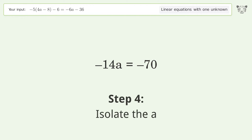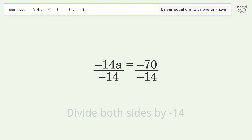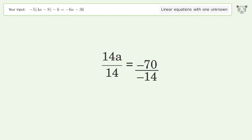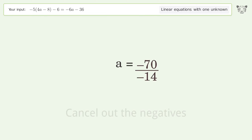Isolate a by dividing both sides by negative 14. Cancel out the negatives and simplify the fraction. Cancel out the negatives again.